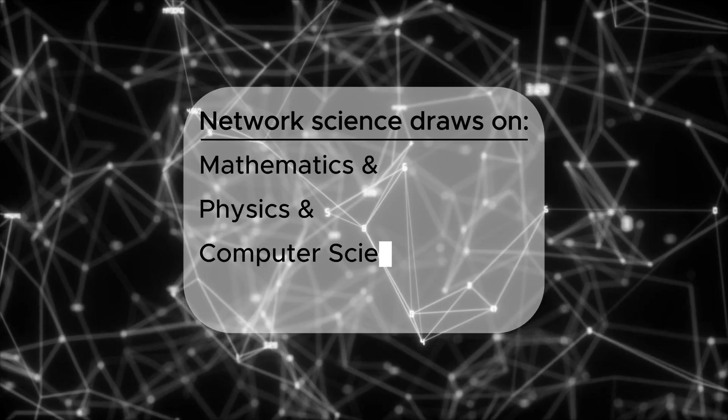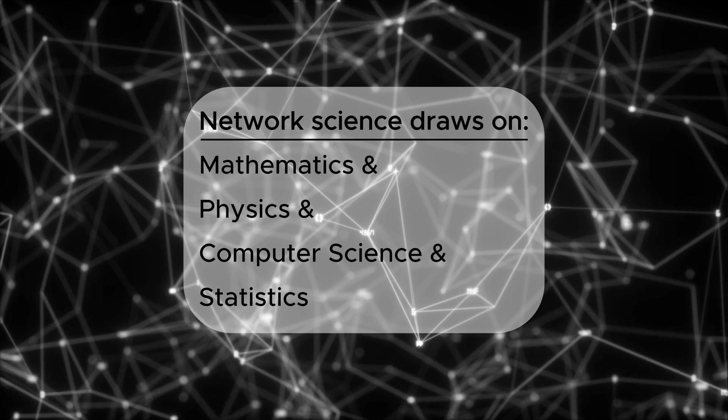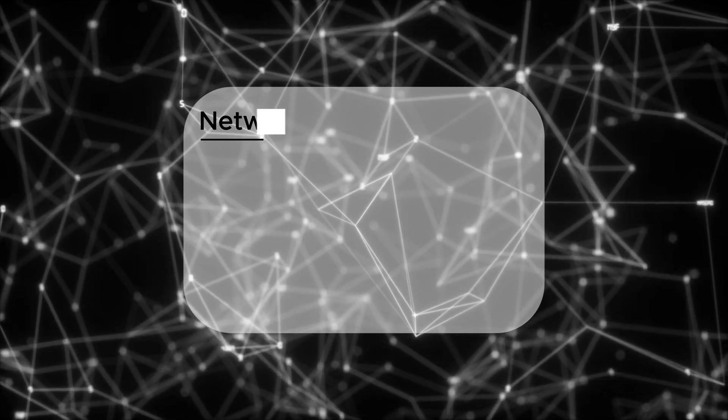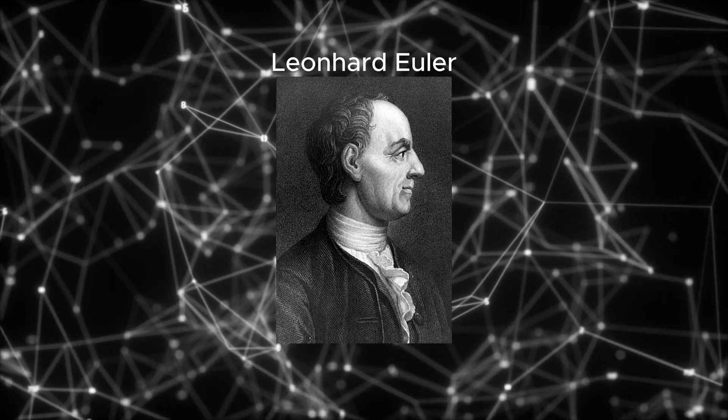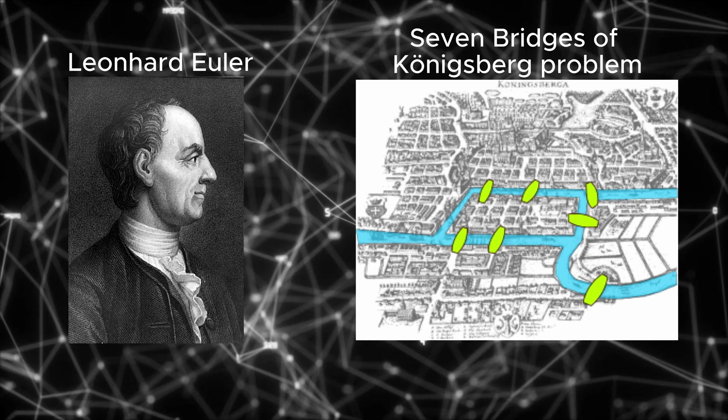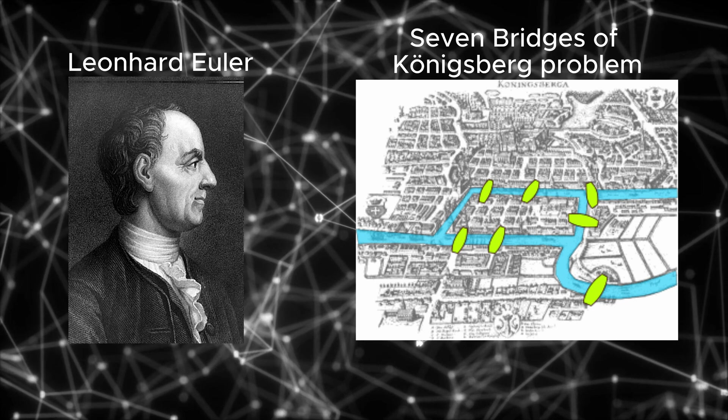Network science has a fascinating history rooted in the intersection of mathematics and physics. Its development began with foundational concepts in graph theory, introduced by Leonhard Euler in the 18th century. Euler's famous solution to the Seven Bridges of Königsberg problem laid the groundwork for understanding networks as systems of nodes and edges.